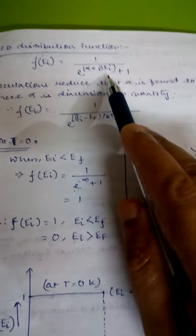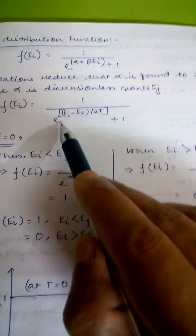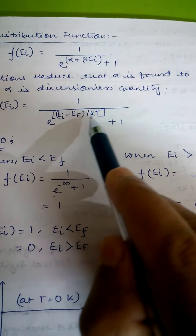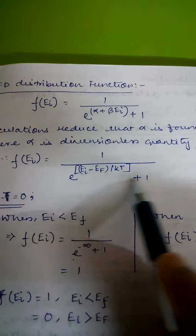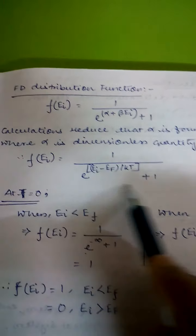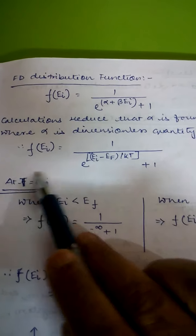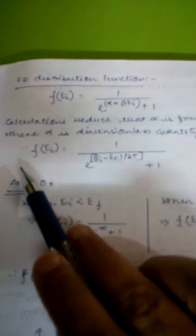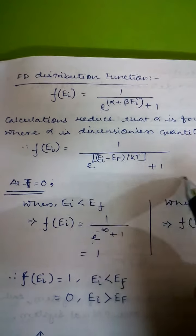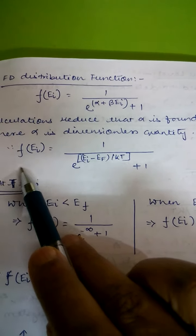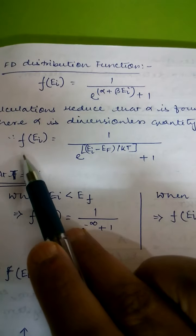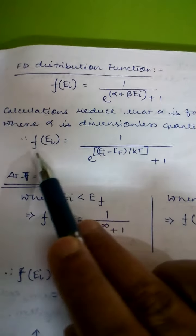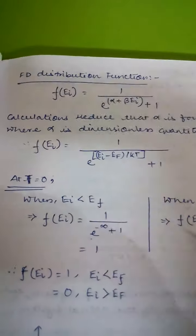Substituting alpha equals minus E_F over kT into the distribution function gives: f equals 1 over (e to the power (e_i minus E_F) over kT plus 1). This is the expression of the Fermi distribution function, which is very important not only from an exam point of view but also for various applications in different fields of engineering, since we deal with electrons which are fermions obeying this FD distribution function.